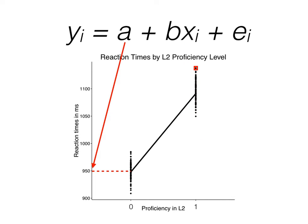Next, we look at our intercept. Remember that for categorical predictors, the intercept is the value of y when x is the default level. In our case, this is roughly 950 milliseconds.